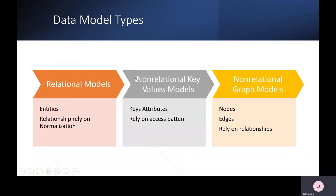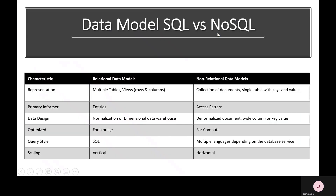Now let's think about data model types — another area of confusion. For relational databases, you think of entities, and the relationship relies on normalization. For non-relational key-value models, you think of attributes — key attributes — which rely on access patterns. For non-relational graph models, you think of nodes and edges, which rely on relationships. When comparing data models, SQL uses multiple tables, views, rows, and columns, while NoSQL uses collections of documents or single tables with key-value pairs.